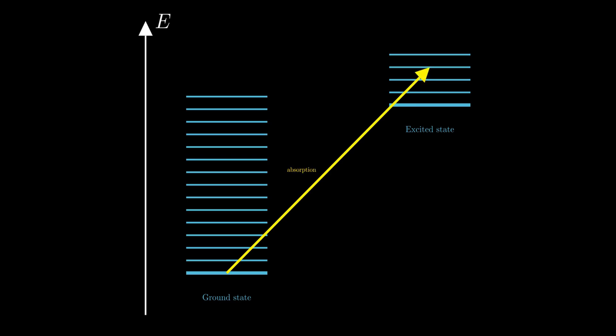To excite it, the molecule absorbs a photon whose energy matches the difference between the two energy levels. If the molecule reaches a vibrationally excited state, it can lose energy through collisions with surrounding solvent molecules.